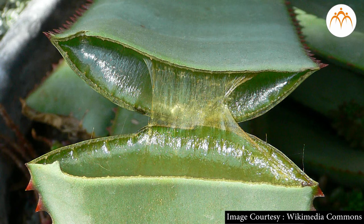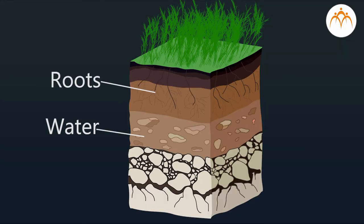Leaves of aloe store water in them, so they are thick and fleshy. In most of the desert plants, roots grow very deep in soil in search of water.